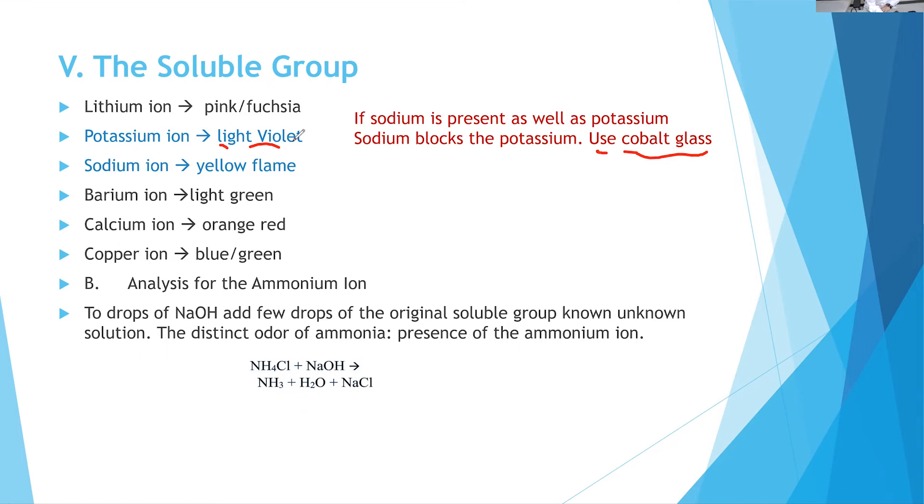Only the purple color would come through the glass and you would see that you have potassium. So this is the flame test. You're using the flame test and based on the color that appears, you can identify presence of each of these ions.